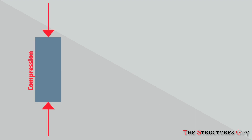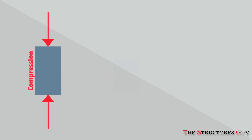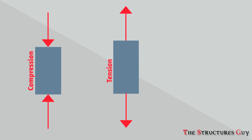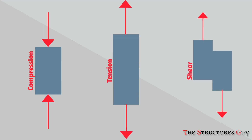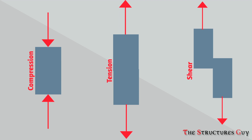There are three kinds of stresses: compression, which is squeezing an object; tension, which is pulling an object apart; and shear, which is sliding parts of an object along a line or a surface.